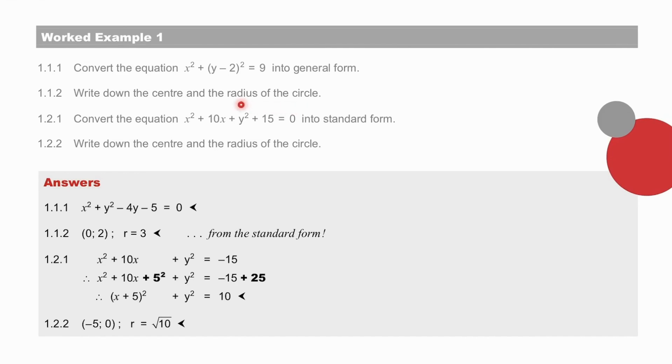Then the conversion of this general form into the standard form. Already we have the constant term of +15, moved to the right as -15, and we complete the square, x² + 10x, half of 10 is 5, squared. So we add 25 here, and we add 25 on the right-hand side.